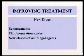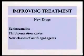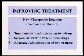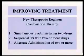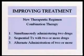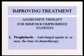Echinocandins — still new — and I hope you just learned some of the basics. Third generation azoles, new classes of antifungal agents — very few though. Combination therapy means simultaneously administering two drugs. Sequential therapy means you give amphotericin B, then 5-FC, then go back to amphotericin B to get away from resistance. And alternate administration of two or more drugs at the same time.